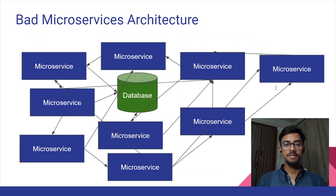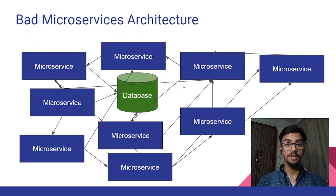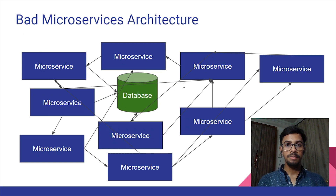Now, you might have a question: why am I telling you about these expectations? This is because when building a microservice, we might end up with an architecture that is not up to the required performance mark or not able to deliver the expectations stated above. Let's take an example — I would like to show you what a bad microservices architecture looks like. The problem with this system is that it is very difficult to maintain, because it requires a lot of coordination with multiple teams to make changes, releases, or achieve fault tolerance. In order to save yourself from such complex situations, you can follow some best practices when building a microservice.